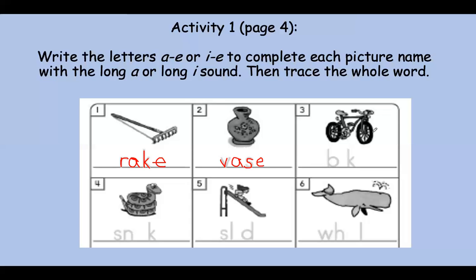Now, look at this one. Do you know what that is? Yeah, it's a bike. Let's say it slow. Biiiike. What do you hear there? Say it slow. Biiiike. Did you hear it? Yes, it's the I sound. So we are going to write an I, and then we have our silent E at the end. Bike. Let's trace the whole word. Biiiike.